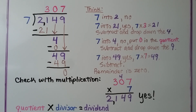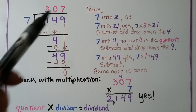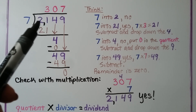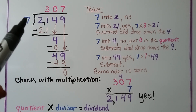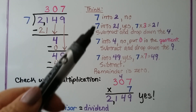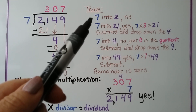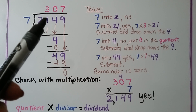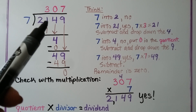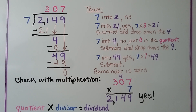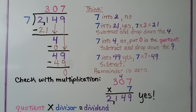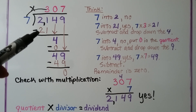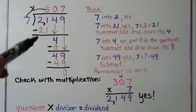This one is important because it gets a little tricky with the zero. We have 2,149 divided by 7. We think, 7 into 2? No, it won't fit. We need to include the hundreds place. 7 can fit into 21 three times because 7 times 3 is 21. We write the 21, subtract, and we get 0.